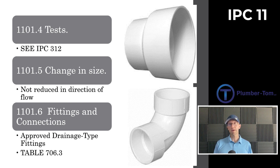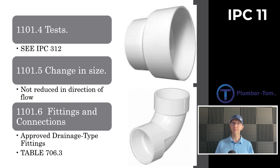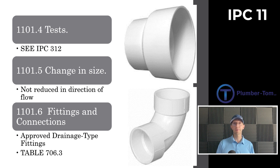1101.4 talks about tests. Just like any other drainage or water system, when we install pipes we want to make sure they're tested to hold pressure and not leak inside the building. The testing for storm drains is the same as any other drainage testing — they refer us back to Chapter 3, specifically Section 312. You have two options: water or air. Either test has to hold for at least 15 minutes. If using water, you need at least a 10-foot head of water. If using air, it's 5 psi.